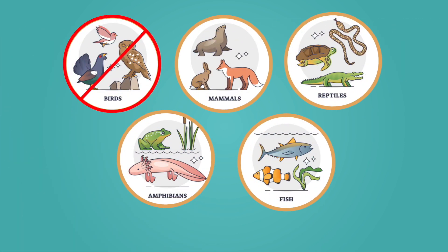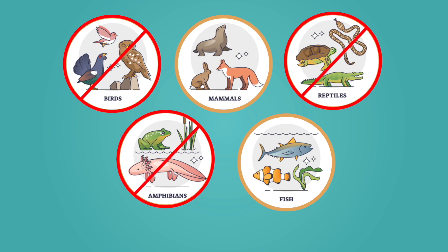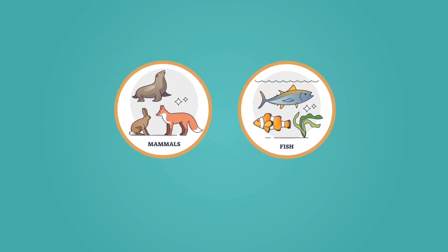Since humans are always warm-blooded and we know we're not birds, there are only two animal classes left that we could belong to: mammals, because all mammals are warm-blooded, and fish, because fish can be warm or cold-blooded. Using what you know about humans, make a prediction. Do you think we are classified as fish or mammals?